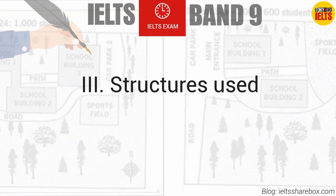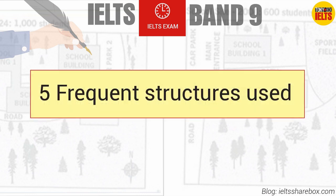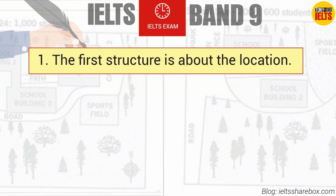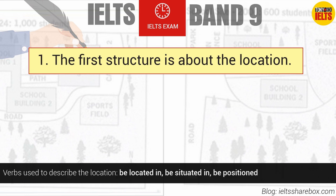Now I will mention the five most frequent structures used in describing the map. The first structure is about location. You can normally use directional words mentioned above to describe the map.